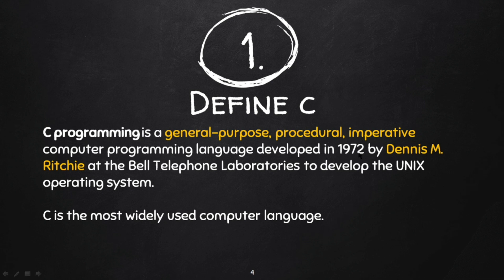C was developed in 1972 by Dennis M. Ritchie at Bell Telephone Laboratories.